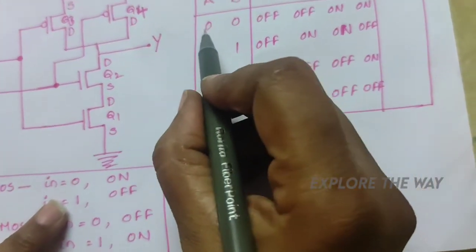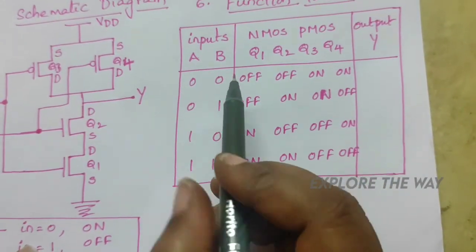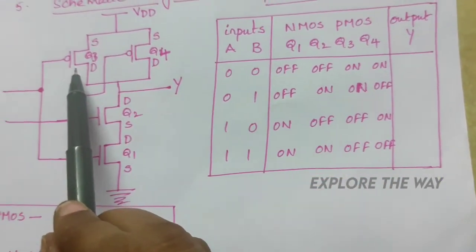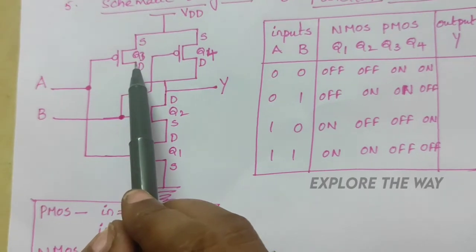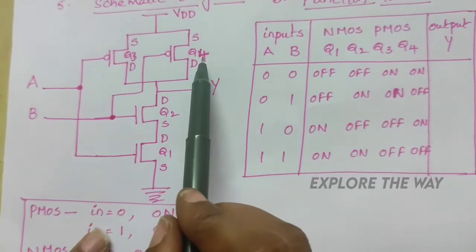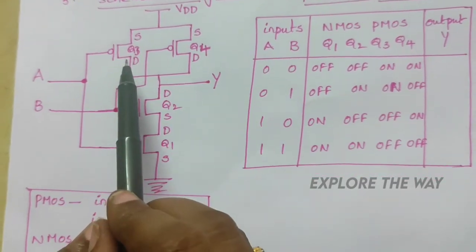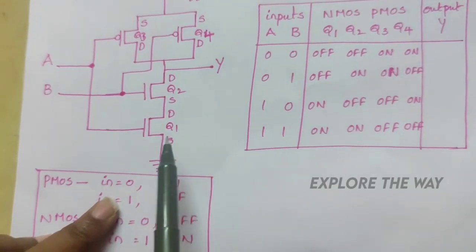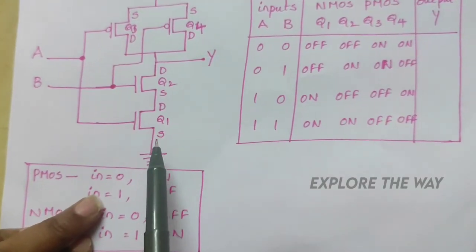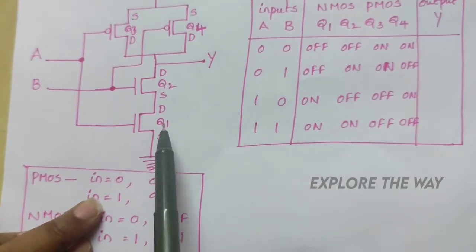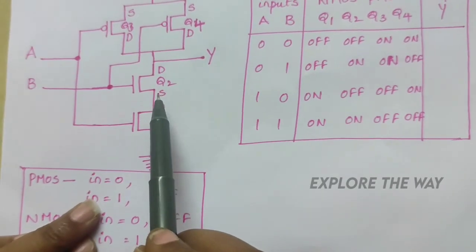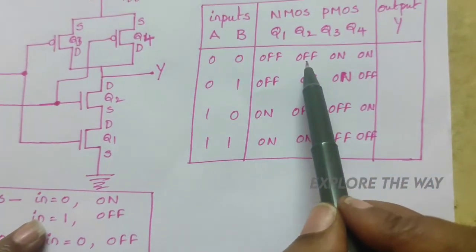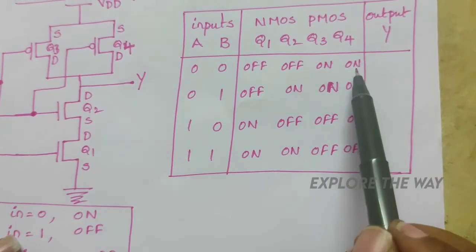When inputs A and B are both 0, the PMOS transistors Q3 and Q4 are in the on state, and the NMOS transistors Q1 and Q2 are in the off state. So Q1 and Q2 are off, Q3 and Q4 are on.